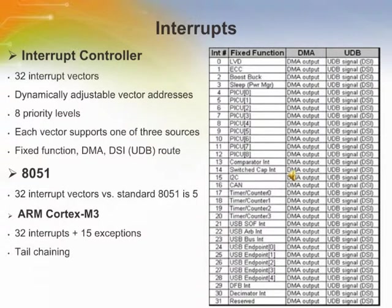Tail chaining allows the processor to transition from the currently executing ISR directly to another pending ISR, without having to spend the normally required cycles to restore state back to main and then store the state again to enter the other pending interrupt.